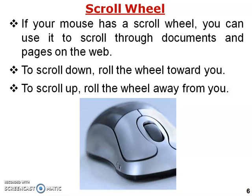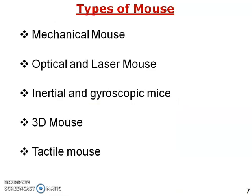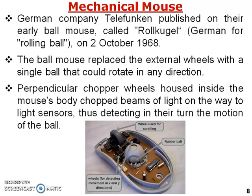Types of mouse: the first type is the mechanical mouse; the second type is the optical and laser mouse; the third type is the inertial and gyroscopic mouse; and there is also the 3D mouse and the tactile mouse.